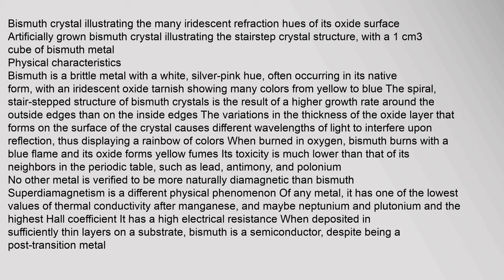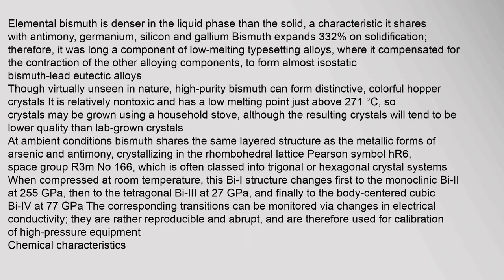When burned in oxygen, bismuth burns with a blue flame and its oxide forms yellow fumes. Its toxicity is much lower than that of its neighbours in the periodic table, such as lead, antimony, and polonium. No other metal is verified to be more naturally diamagnetic than bismuth. It has one of the lowest values of thermal conductivity after manganese and the highest Hall coefficient. When deposited in sufficiently thin layers on a substrate, bismuth is a semiconductor, despite being a post-transition metal. Elemental bismuth is denser in the liquid phase than the solid, a characteristic it shares with antimony, germanium, silicon, and gallium. Bismuth expands 3.32% on solidification.